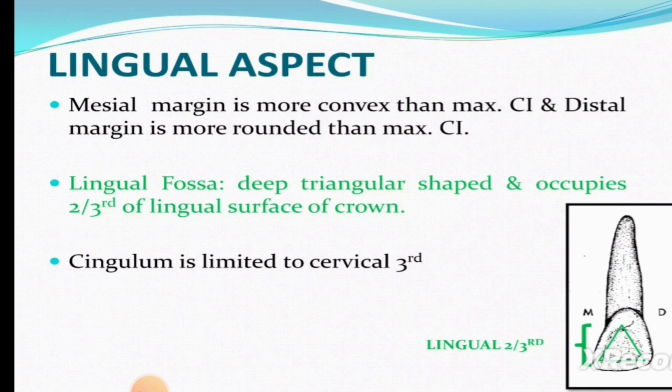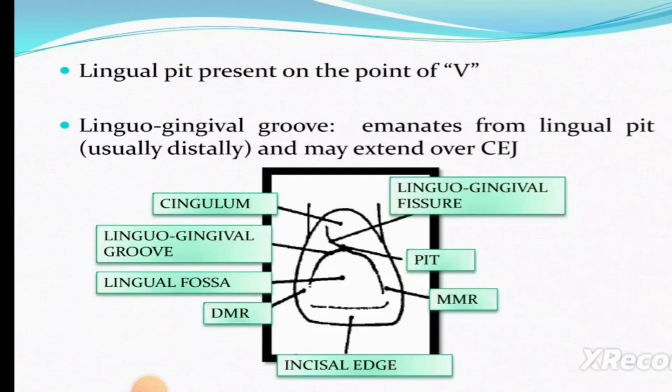For the lingual aspect: there is a deep triangular or V-shaped fossa that occupies two-thirds of the lingual surface of the crown. As you can see in the image, the cingulum is limited to the cervical third — it is not in the middle third. A lingual pit is present, and a lingual gingival groove emanates from the lingual pit and may extend over the cemento-enamel junction.